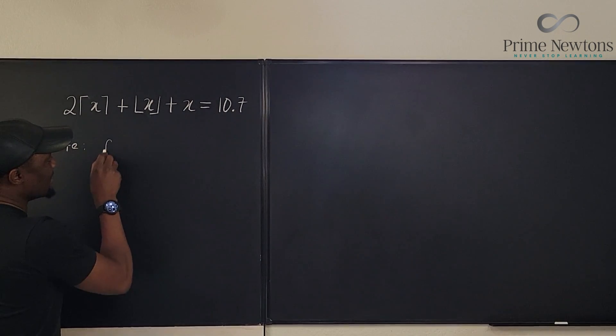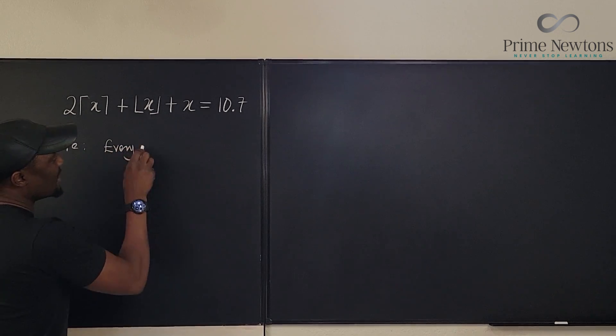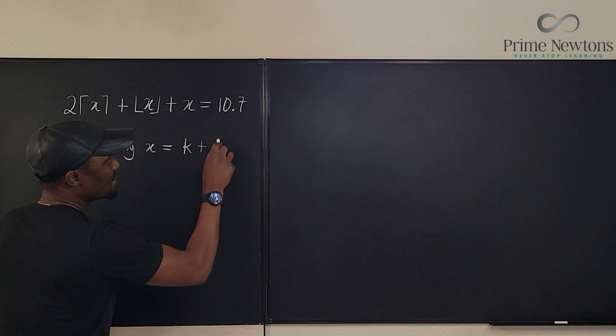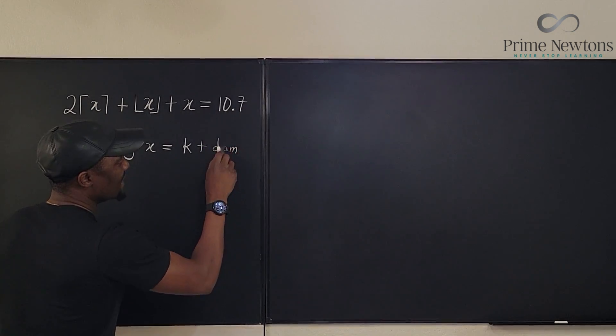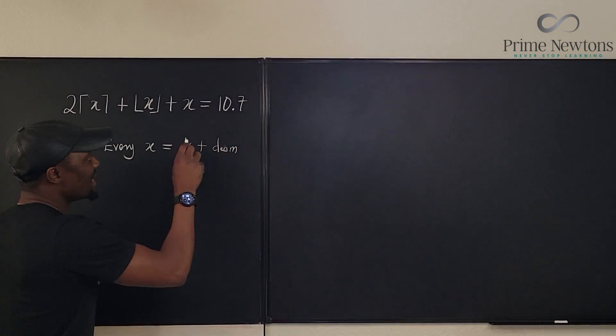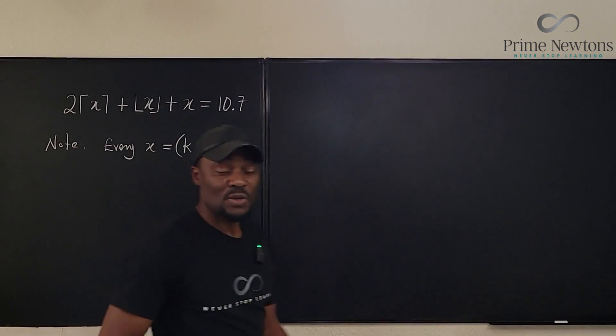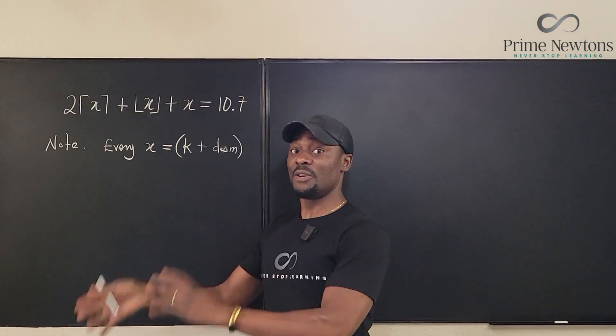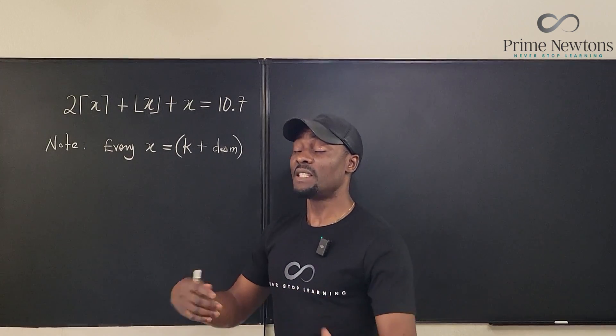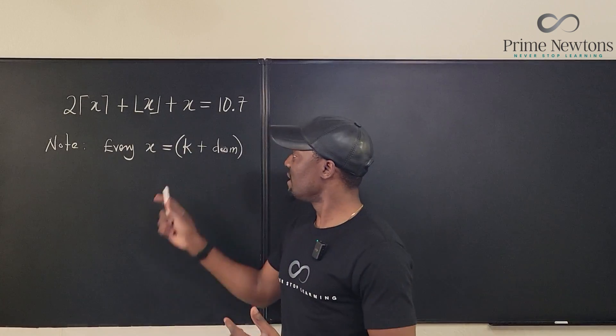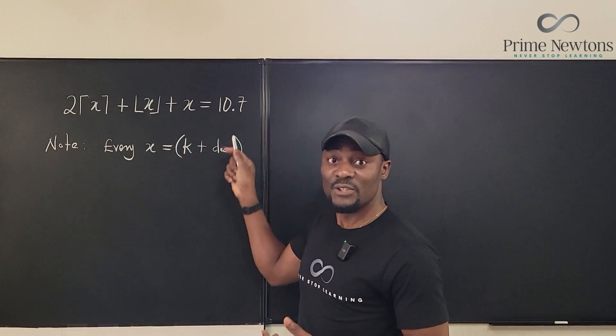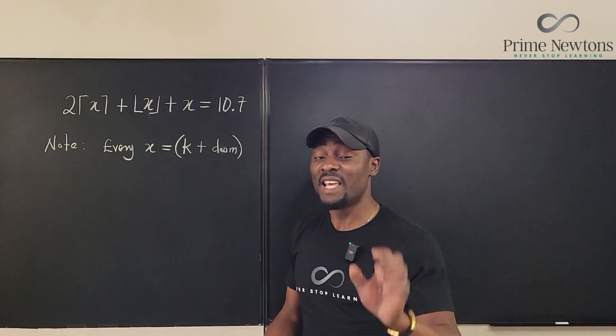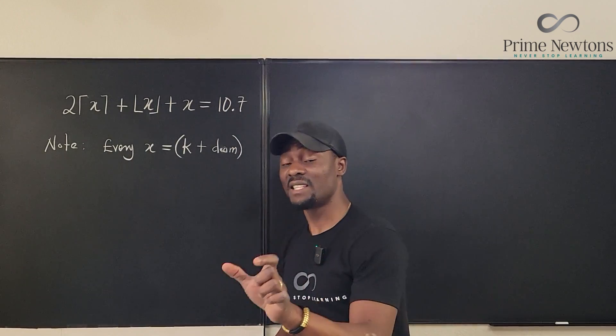Note that every X is equal to K plus a decimal, which I'll write as 0.D. This is every number you write. So if you write the number 2, it is 2 plus a 0 decimal. If you write 7.5, it is 7 plus 0.5. There's always an integer part and a decimal part. If you write 0.5, the integer is 0 and the decimal is 0.5.